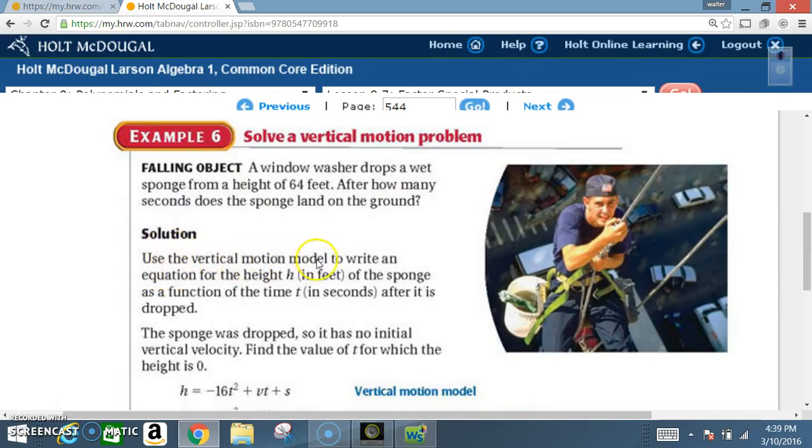Solution. Use the vertical motion model to write an equation for the height h in feet of the sponge as a function of time t in seconds after it is dropped. The sponge was dropped, so it has no initial vertical velocity. Find the value of t for which the height is zero.